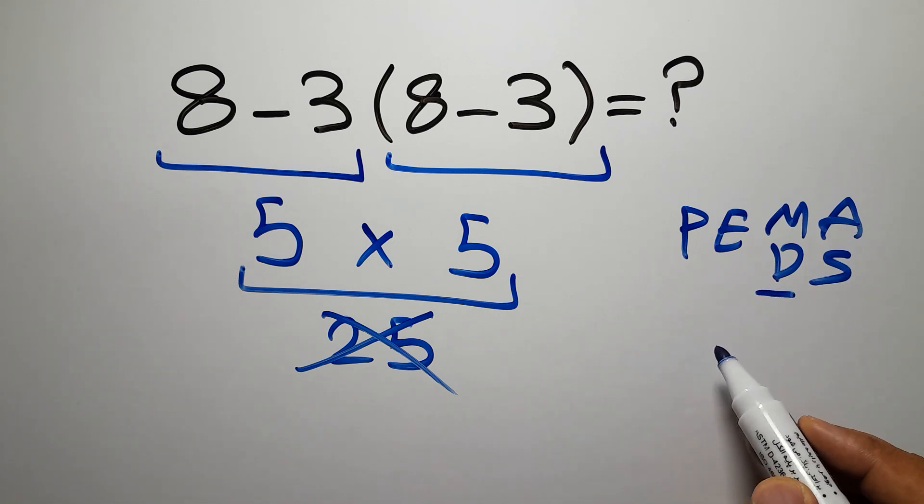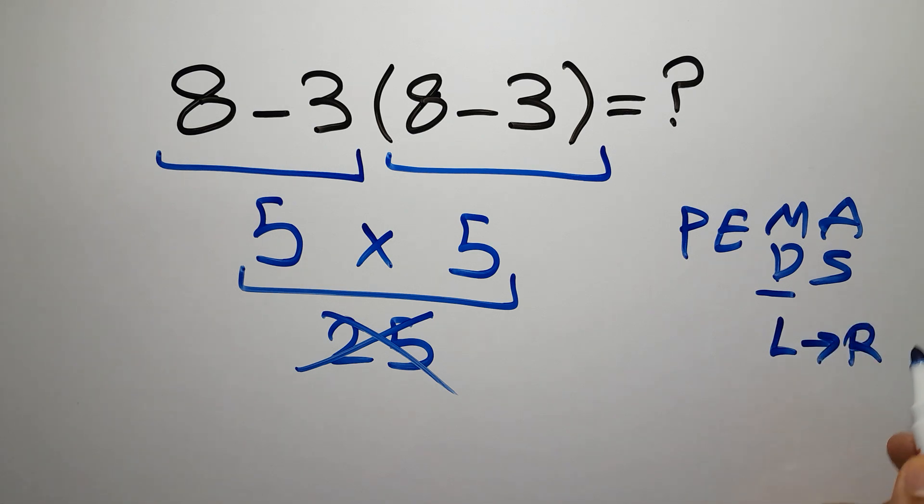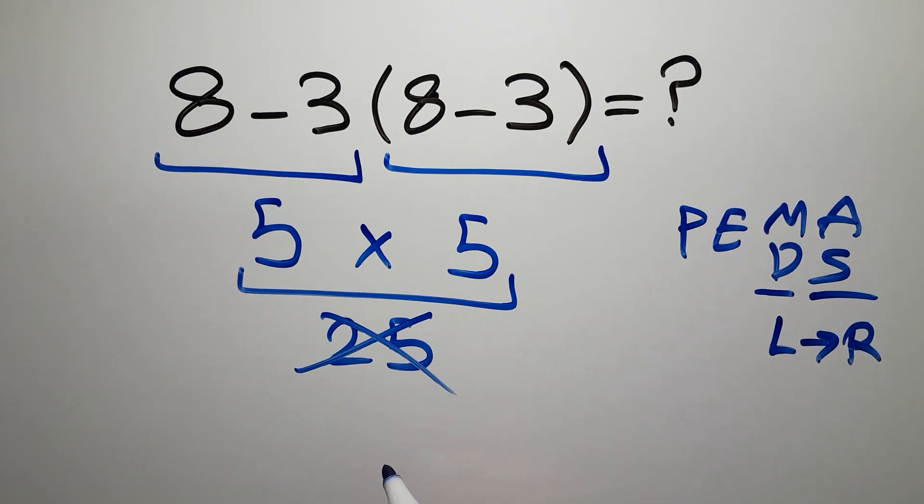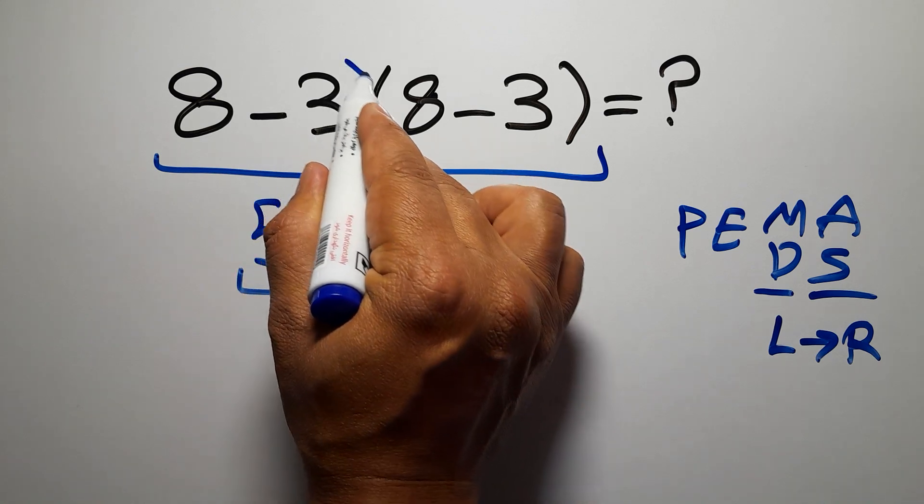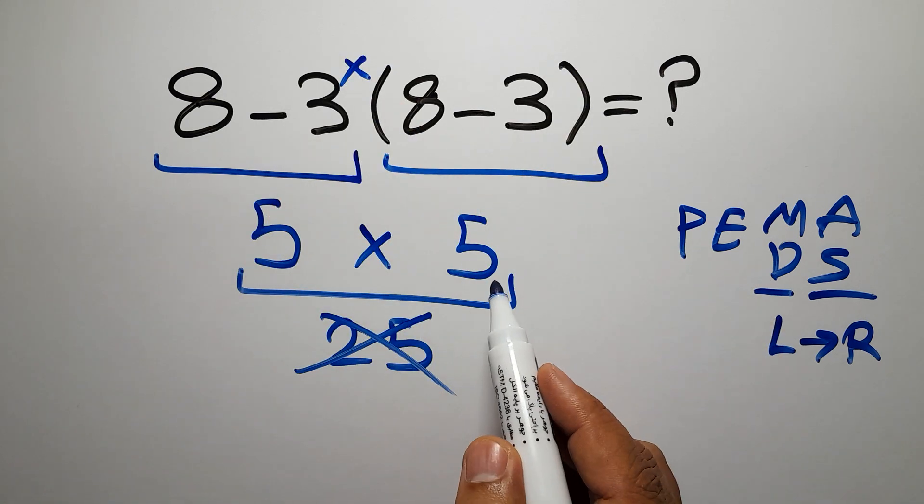Remember that multiplication and division have equal priority and we work from left to right. The same applies to addition and subtraction. In this expression we have one subtraction, one multiplication, and one parentheses.